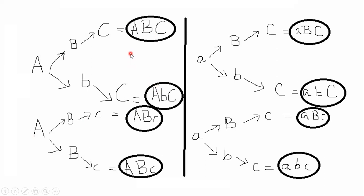Gamete formation is basically dependent upon the law of segregation and the law of independent assortment. The law of independent assortment states that each gene pair — each copy of the gene — may combine with another copy of the gene independently. We have three gene pairs: the first gene pair carries dominant A or recessive a, the second carries dominant B or recessive b, and the third carries dominant C or recessive c. Each copy may segregate with another copy of the gene.